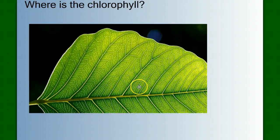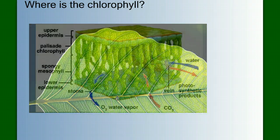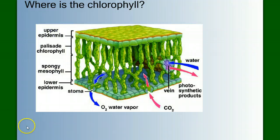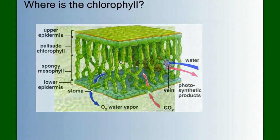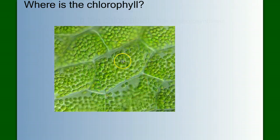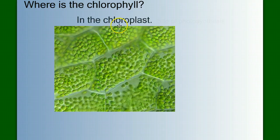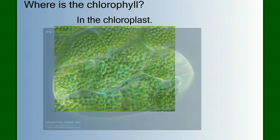So where is the chlorophyll? We have to look deep down inside a leaf. If we look at the structural diagram of a leaf, we can see that down in the mesophyll cells — these middle layer cells — you see all these little green dots. We need to zoom in to one of these cells. Jam-packed in these cells are tons of dark green circles, these organelles called chloroplasts.